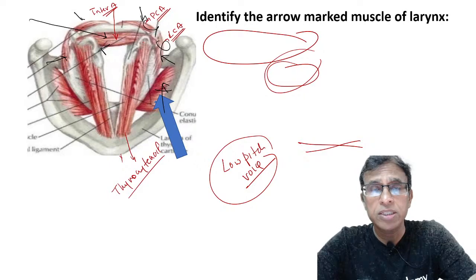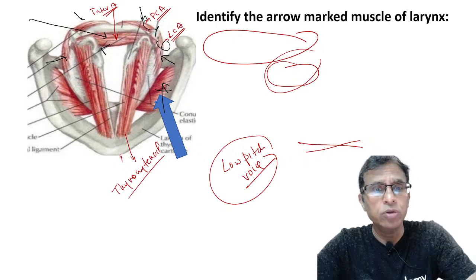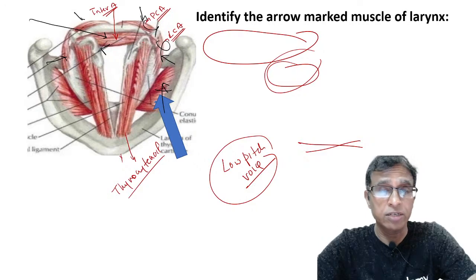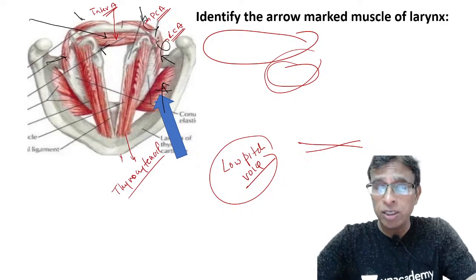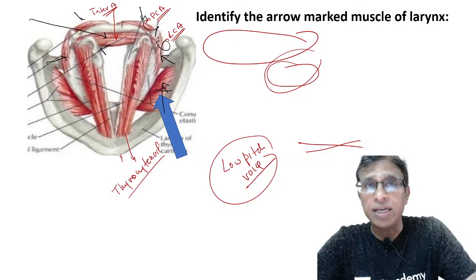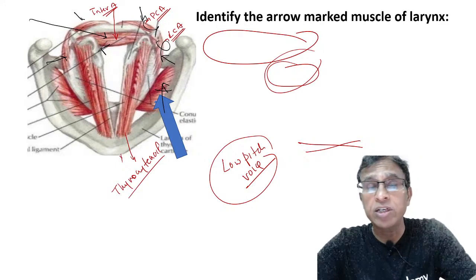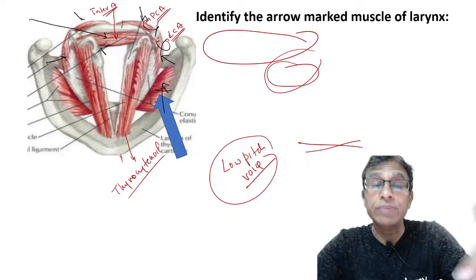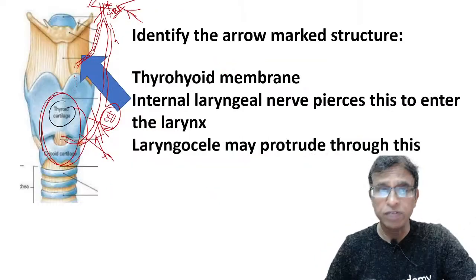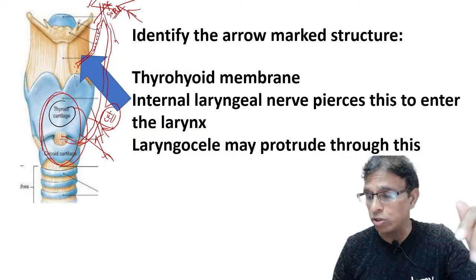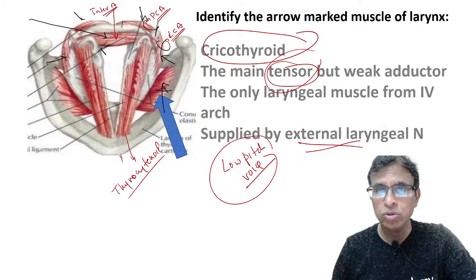To damage the interarytenoid completely, both sides' nerves must be damaged. Key summary of laryngeal anatomy: know the cartilages — paired vs unpaired, shapes, which calcify and which don't. Then study the muscles, which nerve supplies each, and their functions. They can give anatomy-based questions with images to identify nerves or muscles. Interarytenoid is especially important as the only muscle with bilateral supply.